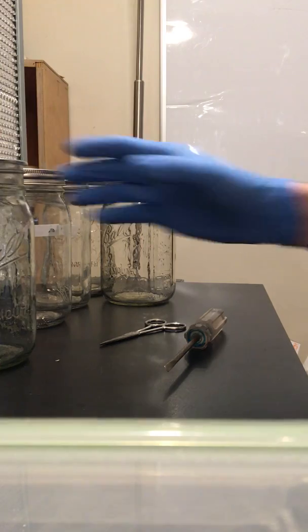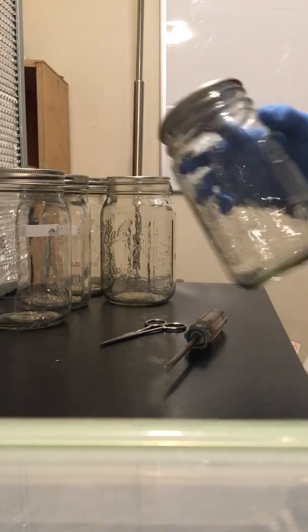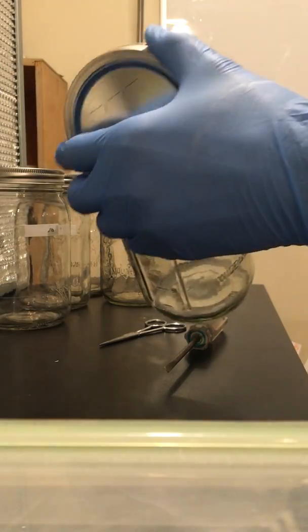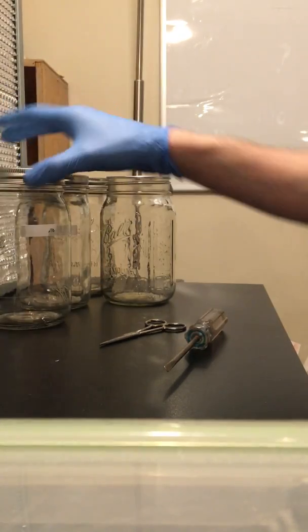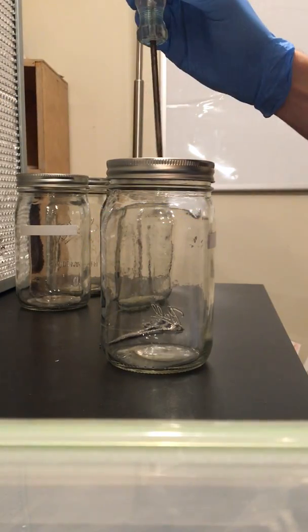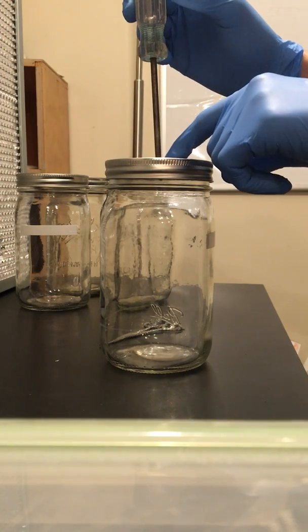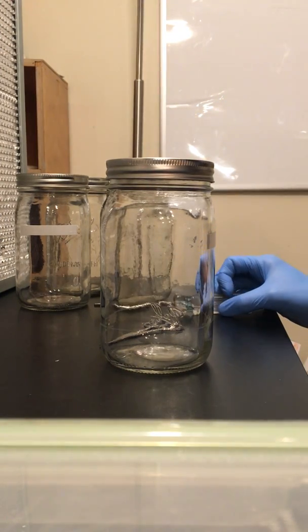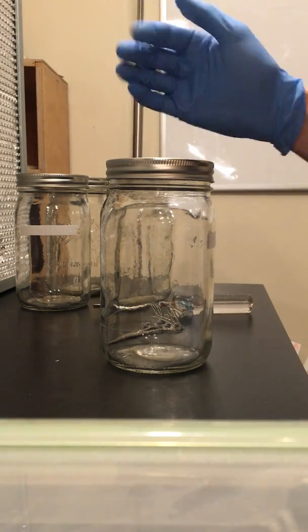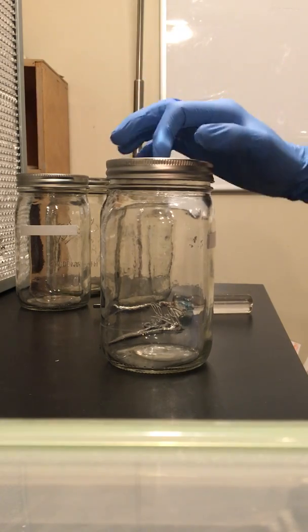So what I usually like to do is I'll grab just one mason jar and put a lid on it. From there, I'll just grab my tool. I like to make my holes in the center. These jars are going to be used for grain transfers, so I just like to have my filter in the middle right here.